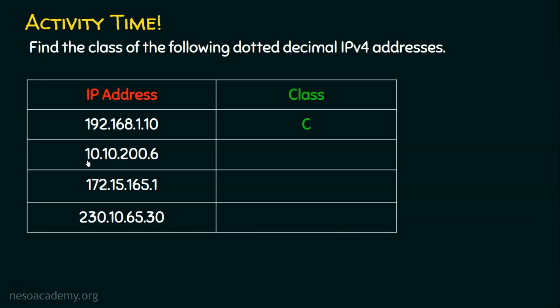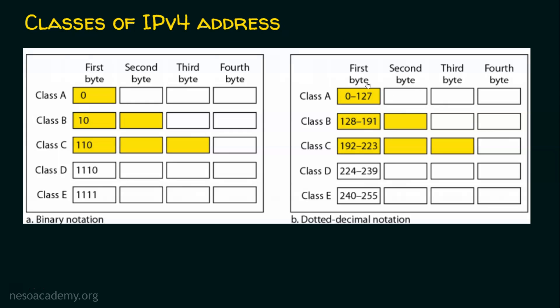The second IP address starts with 10 in the first octet, which is between 0 and 127, so it is Class A. The third IP address has a first octet between 128 and 191, so it is Class B. The fourth IP address is Class D — a multicast address — because its first octet is between 224 and 239. To solve these questions, you must be proficient with this classification table and refer to the first octet values.